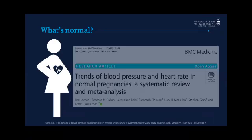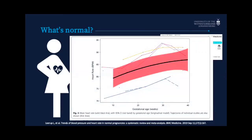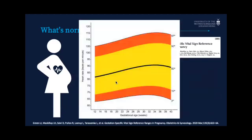That raised the question of whether we're getting the 10 to 20 beats per minute, 20 to 25% increase wrong. The same group then did a study of pulse rates, blood pressures, SATs, and respiratory rates in 1,000 women, showing that heart rate doesn't go up by more than about 8 to 10 beats per minute. So is 120 beats per minute too high as your maximum heart rate in pregnancy?